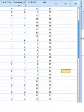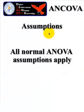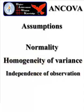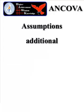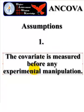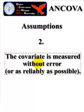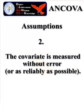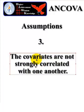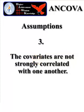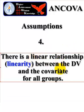Here's our data in the spreadsheet. The assumptions for a normal ANOVA apply — homogeneity of variance and independence of observation — and we're assuming those are okay. Now these are the additional assumptions of an ANCOVA. We did measure the covariate; we have a list of their age in weeks before we started. We're assuming their weeks of age were recorded properly. Covariates cannot correlate strongly with one another; we only have one, so that's not an issue. Now we have to check the linearity between the DV and the covariate.